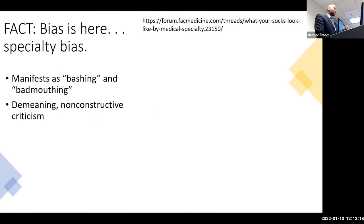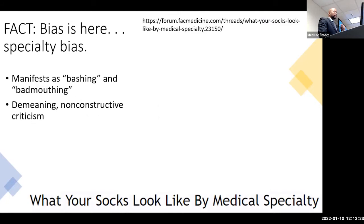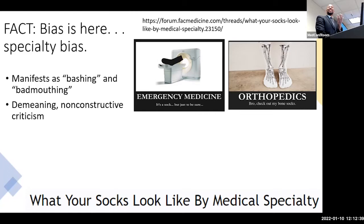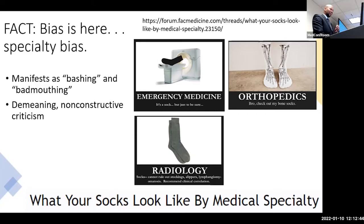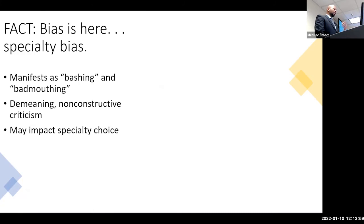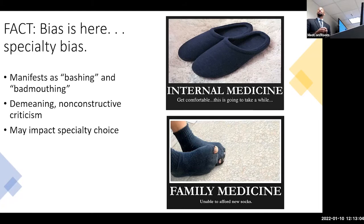Here's a quick interlude: a website about what your socks would look like by medical specialty. Emergency medicine, orthopedics — 'Bro, check out my bone socks.' Radiology: 'Cannot rule out stocking slippers — recommend clinical correlation.' Psychiatry: 'Times up.' Internal medicine: 'Get comfortable, this is going to take a while.' Family medicine: 'Unable to afford new socks.' The reality is this stuff impacts us and impacts specialty choice. Biases impact our decisions — they can be very problematic because we're blinded in instances where they're not accurate, but they don't align with our expectations.